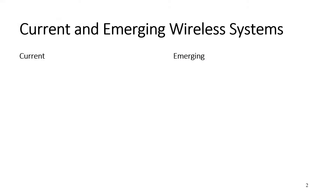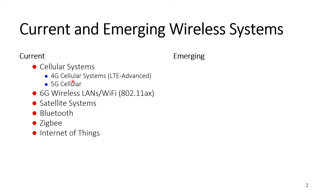We're going to have basically two videos. The first one is about current systems — the classical systems — and there we'll talk about cellular systems, whether 4G or 5G. Then we'll talk about Wi-Fi wireless LANs, also referred to as 6G, the 802.11ax. One slide about satellite systems, and then we have Bluetooth, ZigBee, and the trending technology of Internet of Things.